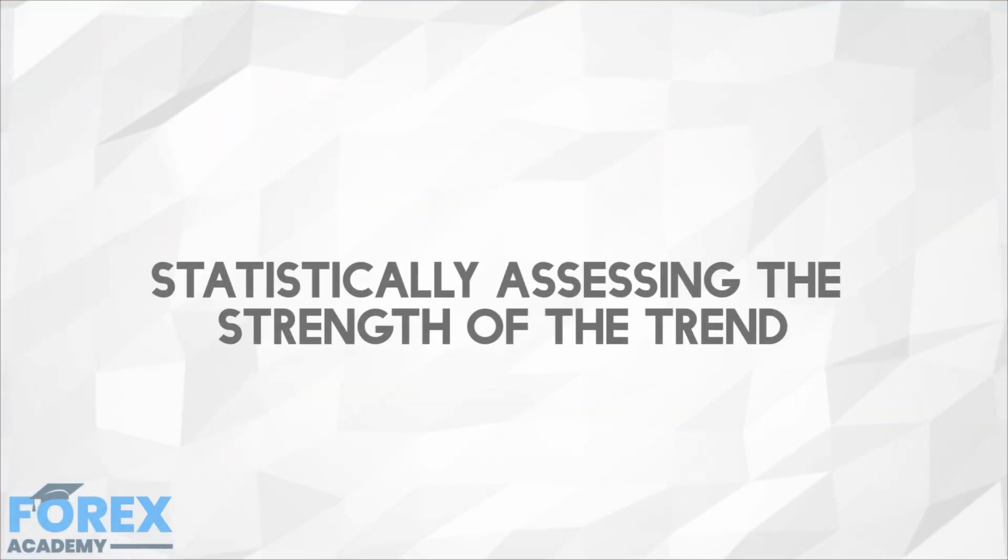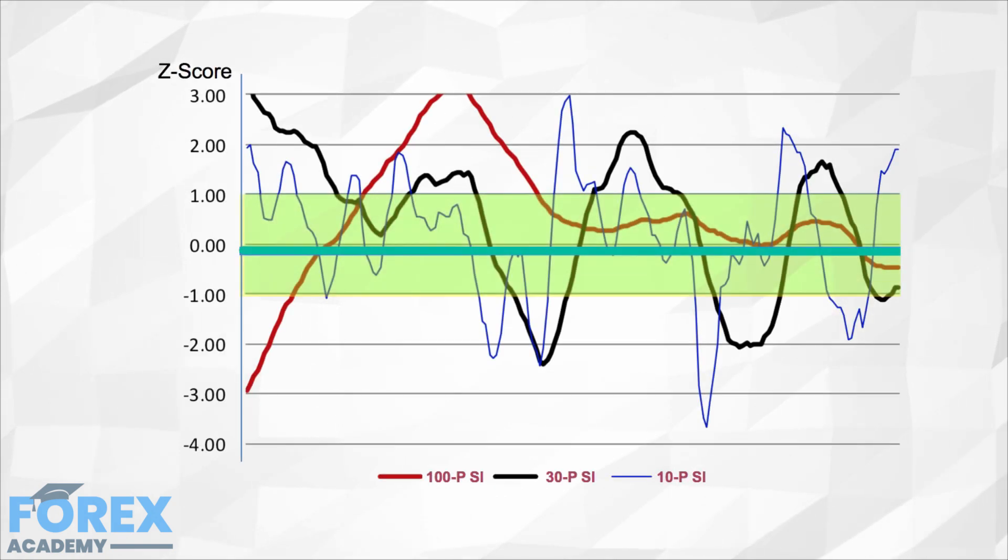Statistically assessing the strength of a trend. A trend can be described by a price change, that is price is making a slope. The slope of the trend shows the strength of the trend. The steeper the trend, the stronger it is. If the slope is zero or very close to it, the market is ranging.